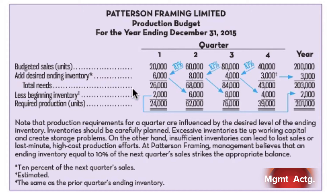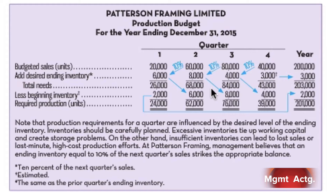We don't start from zero every month - we have some beginning inventory. This beginning inventory is what we ended last year with, and we get that number from the balance sheet: finished goods inventory tells us how many units we have. If in Q1 we need 26,000 units and we already have 2,000, required production is 24,000. Notice that ending inventory in Q1 becomes beginning inventory of Q2, and desired ending inventory in Q2 becomes beginning inventory of Q3, and so on.